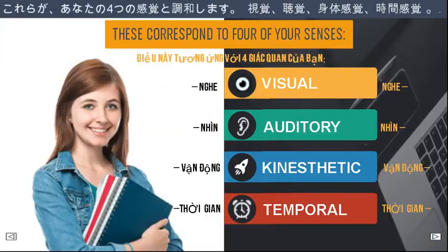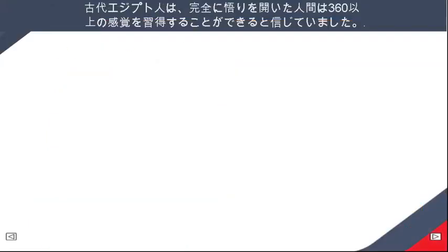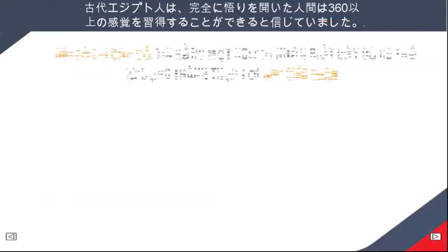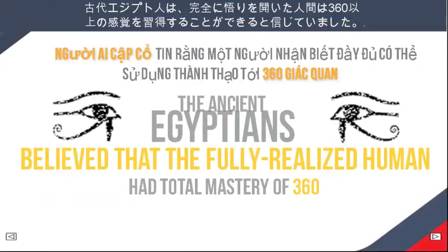These correspond to four of your senses: visual, auditory, kinesthetic, and temporal. The ancient Egyptians believed that the fully realized human had total mastery of 360 senses.